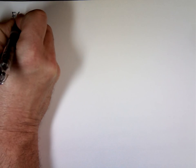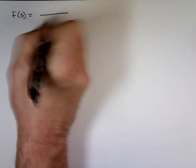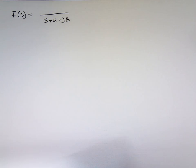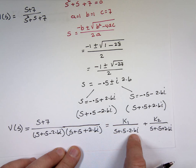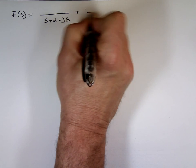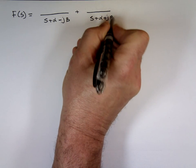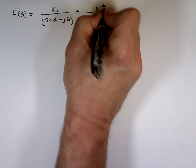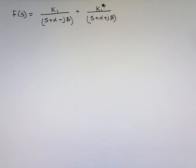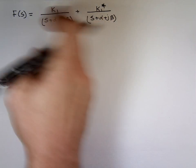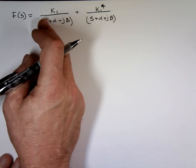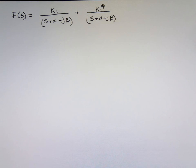If you have in the bottom S plus alpha minus j beta, and the other one is S plus alpha plus j beta. Notice alpha and beta are the same for both of them. The good news is, if you call this K1, this will always be the conjugate of that. So, you only have to find one of them. K2 is equal to the conjugate. So if this is 5 angle 30, this is 5 angle negative 30. So you only have to find K1.